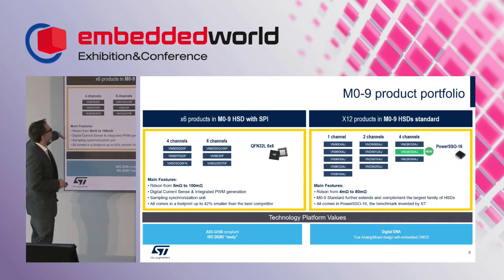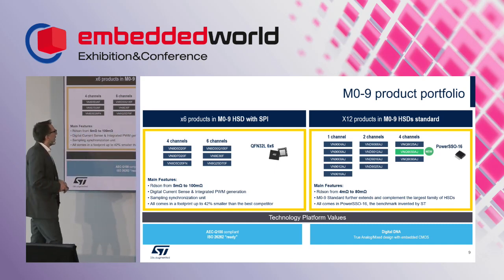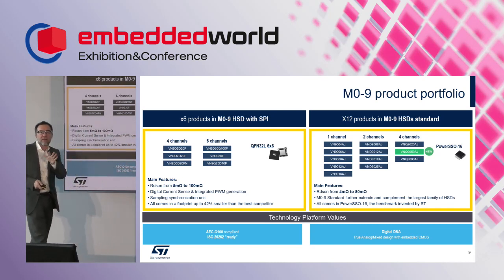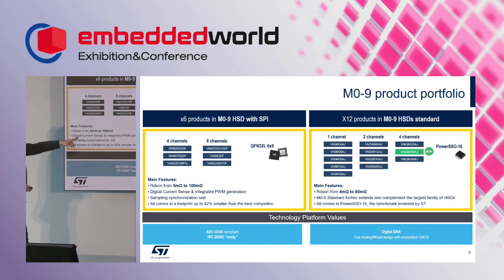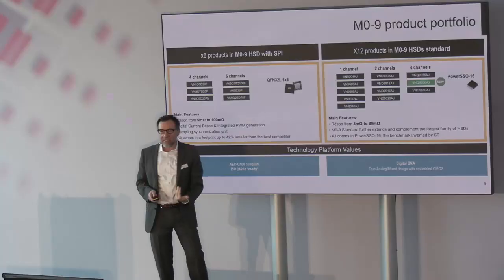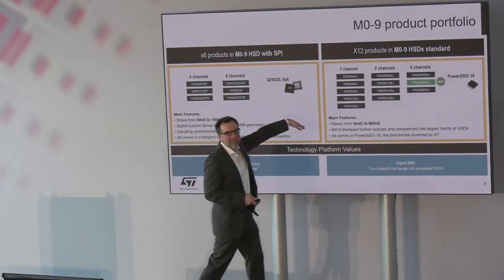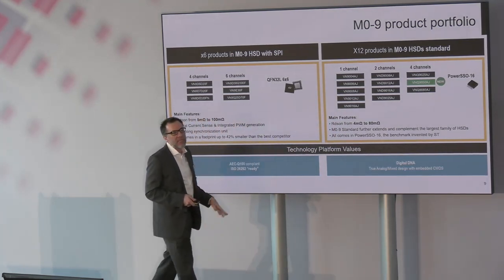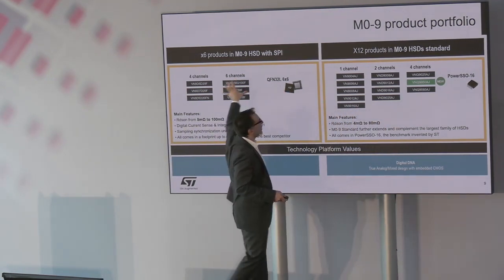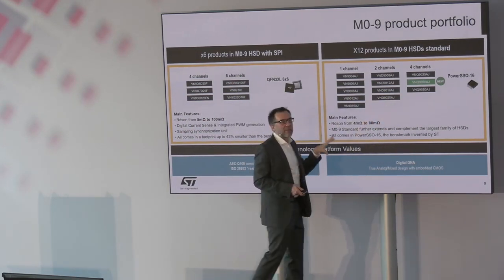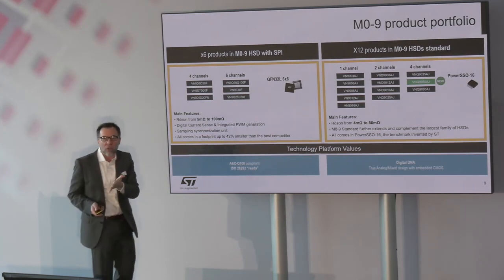This is the product portfolio — two families. The M09 is already in production and available to order. The complete family has been qualified for approximately one year. We have SPI drivers with different RDS-on from 5 milliohm to 100 milliohm in a unique package. For parallel SA drivers, they range from 4 milliohm to 80 milliohm, in one, two, and four channels in the very tiny PowerS16 package. All devices are pin-to-pin compatible, and even pin-to-pin compatible with M07, the previous generation in production for almost 10 years.